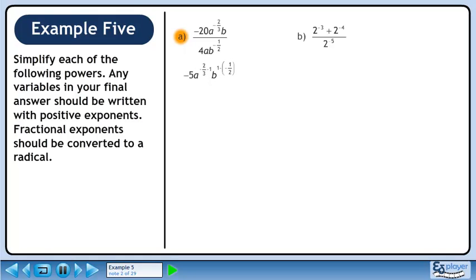Minus 20 over 4 reduces to just minus 5. Divide the powers by subtracting their exponents. Clean up the double signs in the exponents. Simplify to get minus 5 times a raised to the minus 5 over 3 times b raised to the 3 over 2.